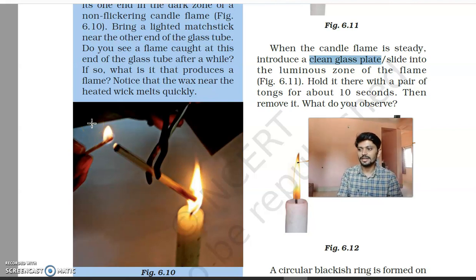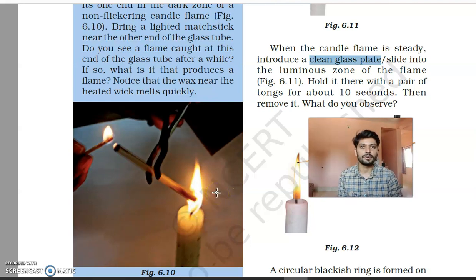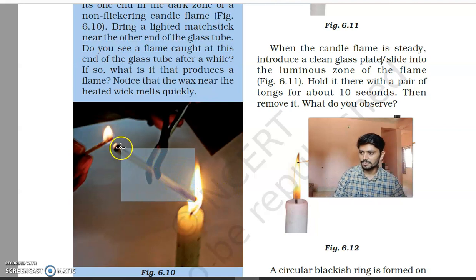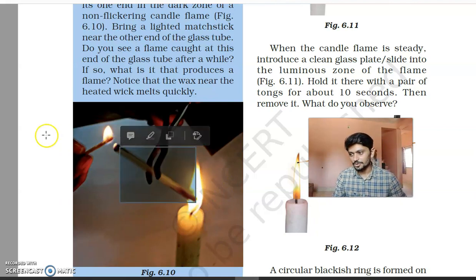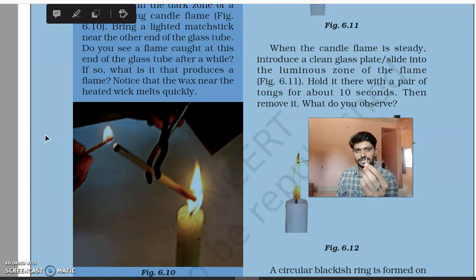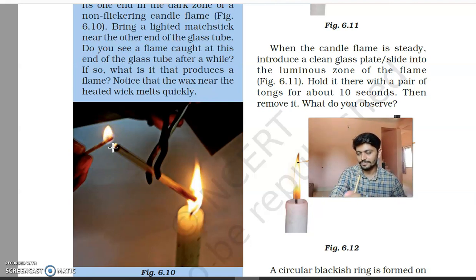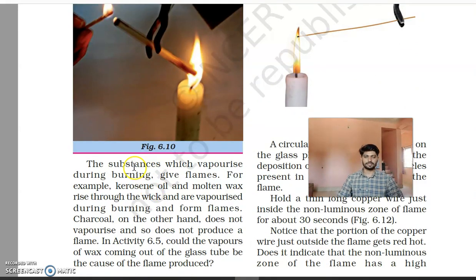At the other end of the hollow glass pipe, place a matchstick. After a few seconds, you will observe that the matchstick gets burnt automatically — without lighting it. This is because the unburnt wax particles in the innermost zone are in a vaporized state at very high temperature. These vapor particles travel through the pipe to the other end. At that end, the matchstick has air, fuel (the wax vapors), and heat — so it ignites. This experiment shows that there are substances which can act as fuel when vaporized.